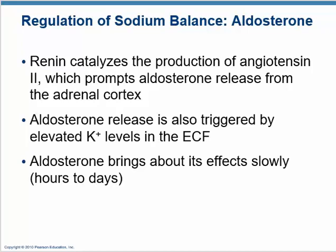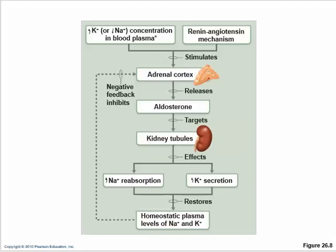Aldosterone can also be triggered by elevated potassium levels. Overall: increased potassium or decreased sodium in the blood, or renin, stimulates the adrenal cortex to release aldosterone, which causes kidney tubules to increase sodium reabsorption and increase potassium secretion via the sodium-potassium pump. The resulting changes in plasma sodium and potassium negatively feed back to the adrenal cortex.